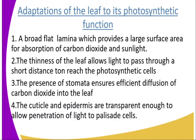The second adaptation is the thinness of the leaf. This allows light and carbon dioxide to pass through a short distance through the photosynthetic cells. Remember the lamina of the leaf is very thin, and this thinness allows light to pass very quickly through a short distance through the photosynthetic cells.